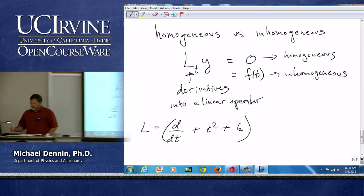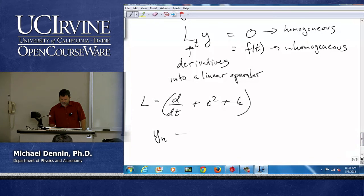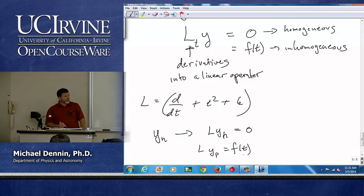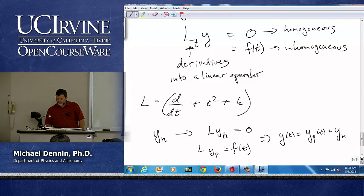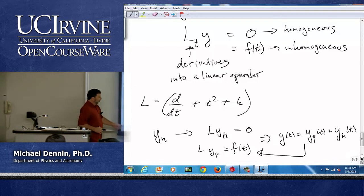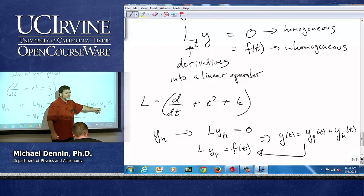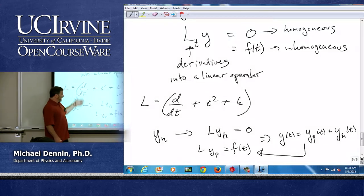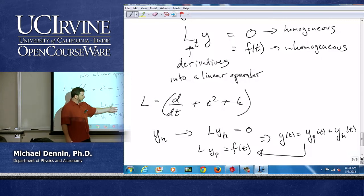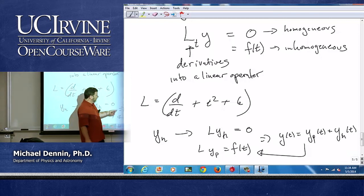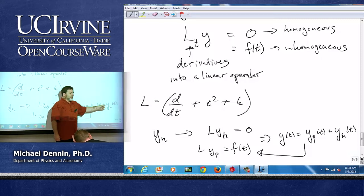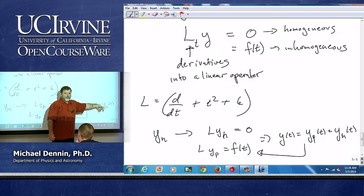So if I have y_h such that L acting on y_h equals zero, and I have some y_particular that solves Ly(t) equals f(t), then y(t) that's equal to y_particular(t) plus y_homogeneous(t) will also solve that. Because when I act with my linear operator on the homogeneous part, I just get zero. And that's why this kind of notation of linear operators is really helpful. Because you can easily see, linear operators by definition, L(a + b) is L(a) plus L(b), and L(b) is zero, so it all works out.